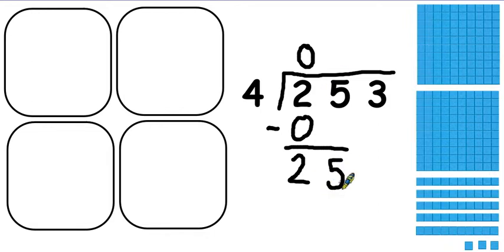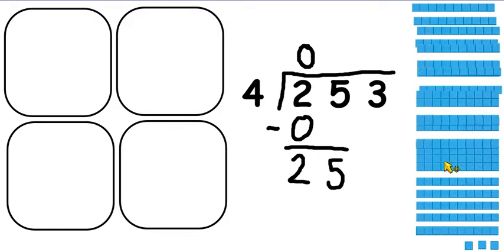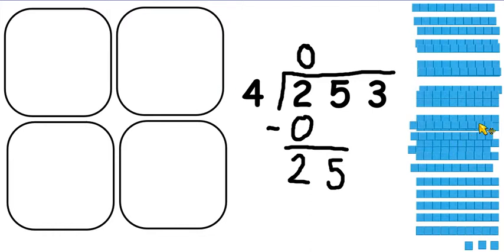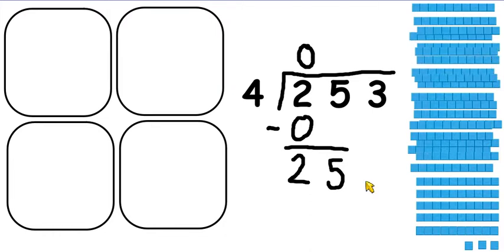So I'm bringing the 5 tens down, but really what I'm actually doing here is breaking those 200s up into tens. So rather than 200s, we can split those up so that we've got — if we split our 100s up into tens, we have 25 tens. Now we can start sharing those 25 tens.